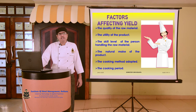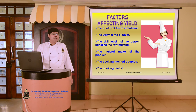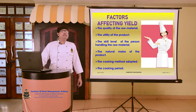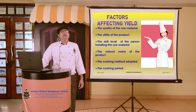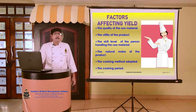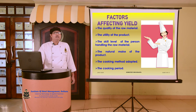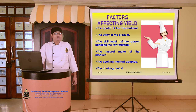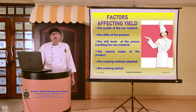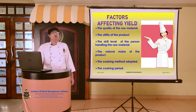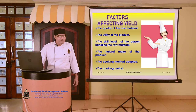Having focused on pre and post-cooking yield, let us find out what are the various factors which affect yield. There are several internal and external factors: first, the quality of the raw material — the more fresh the raw material, the higher the yield, as wastage would be less. Second, the utility of the product. For example, if we are using chicken for a boneless kebab, the yield will be lesser because the entire bones would be removed. If we are using chicken for a with-bone curry, the yield will be slightly higher as we are retaining the bones.